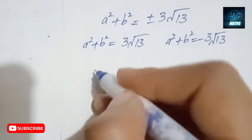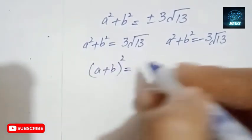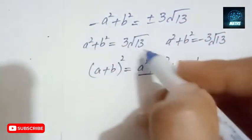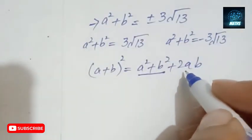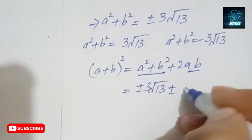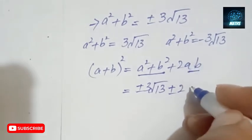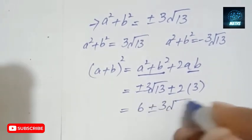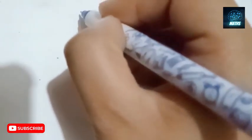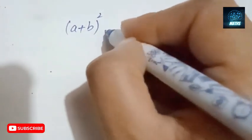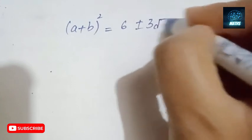Further, I need to move towards a plus b. So (a plus b)² can be written as a² plus b² plus 2ab. I know the value of a² plus b², which is ±3√13, and I also know ab equals 3. So (a plus b)² equals ±3√13 plus 2 times 3, which gives (a plus b)² equals 6 ± 3√13.